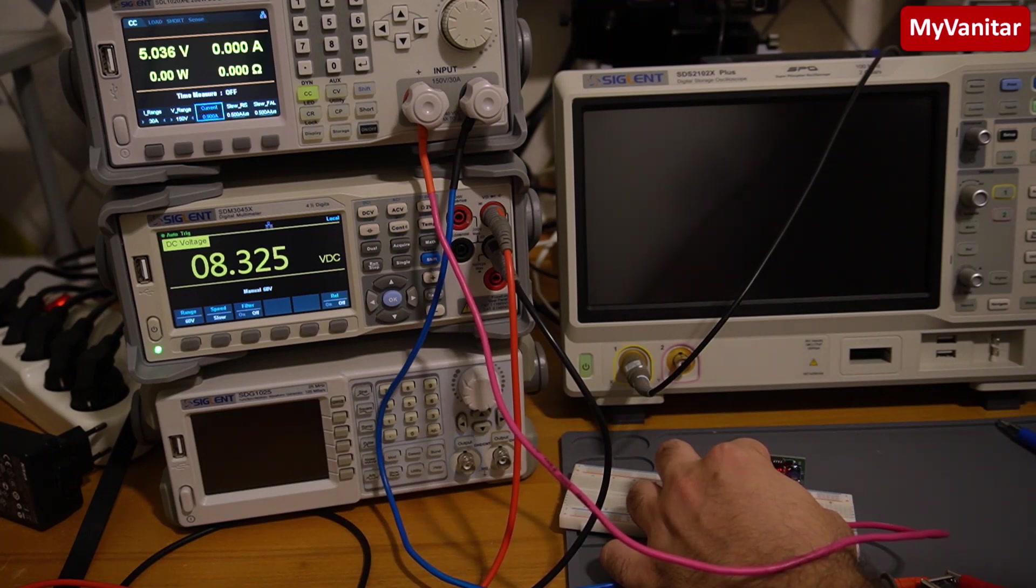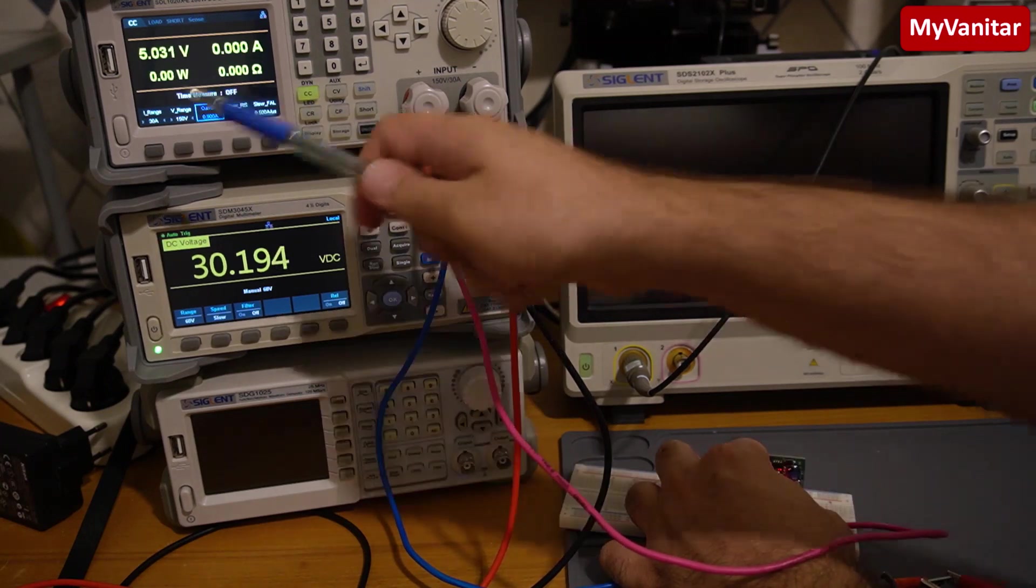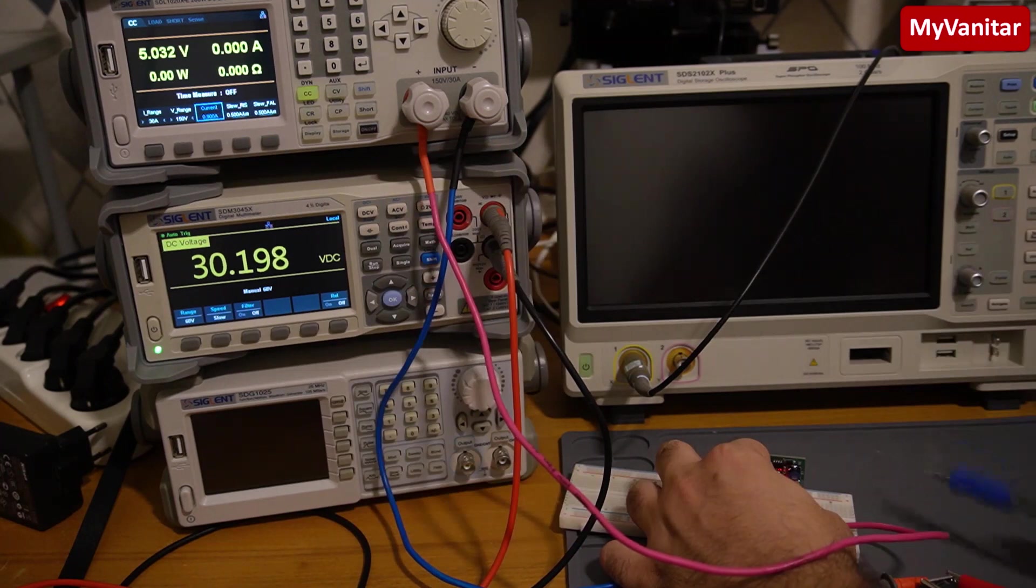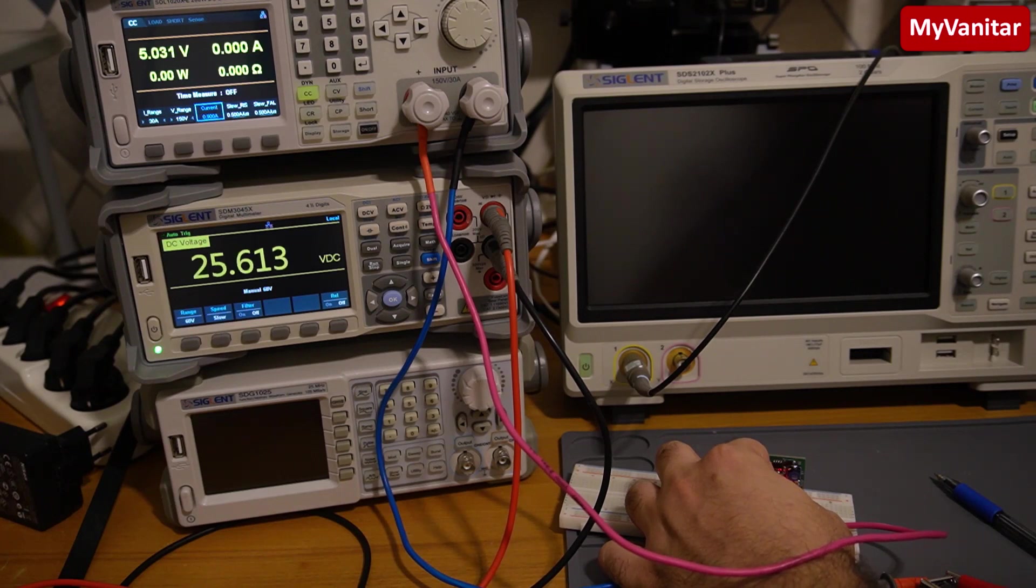Now the first test is, and this is the minimum input voltage as I told you, the first test is that I increase the input voltage suddenly to the maximum. So my power supply goes up to 30 volts. Let's go to 30 volts suddenly. So as you see, the output voltage didn't fluctuate. So it shows the feedback path and control loop works flawlessly.